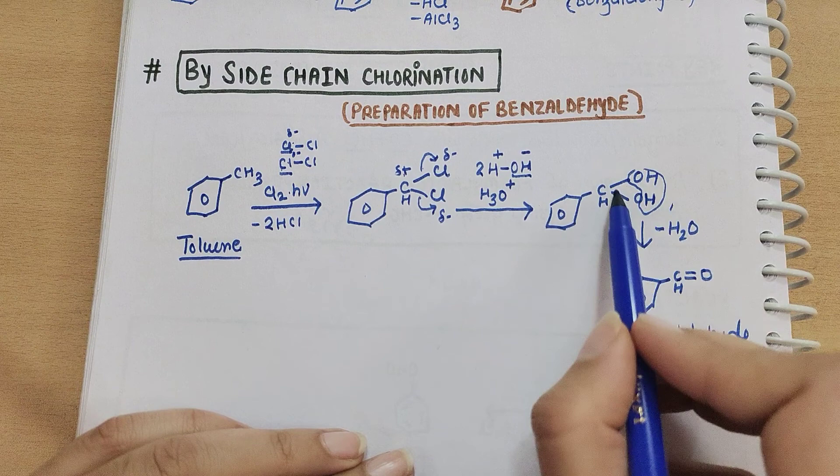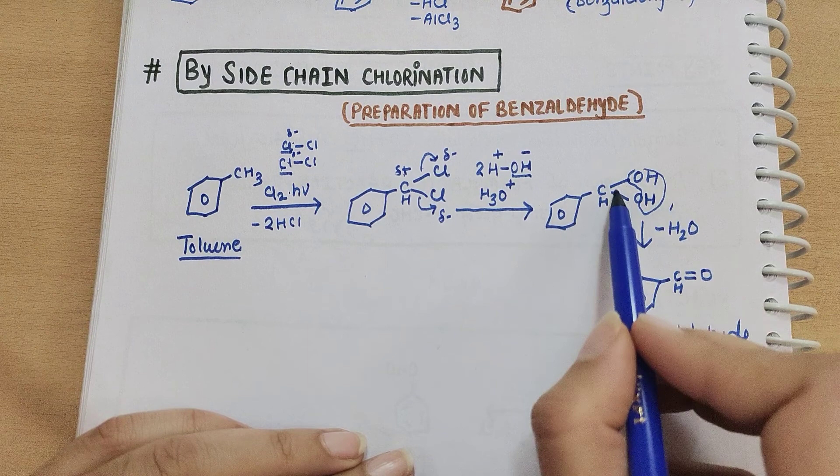After chlorine, convert by hydrolysis OH groups to carbonyl group, and this is benzaldehyde. Now let's start ketone preparation. Thank you so much, stay tuned.